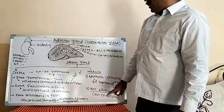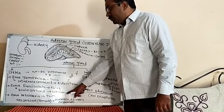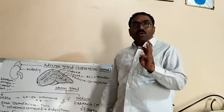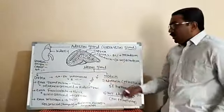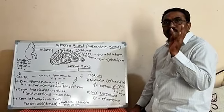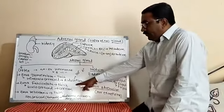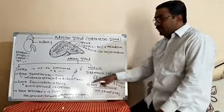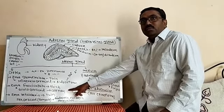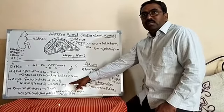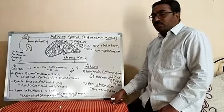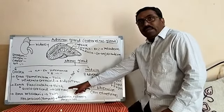In the glucocorticoid group, the main hormone is cortisol. Glucocorticoid hormones help in the metabolism of carbohydrate, protein, and lipid, as well as in the synthesis of energy. Glucocorticoid hormones also help in the production of RBC and stimulate blood cells. This hormone also helps to suppress antibody production.